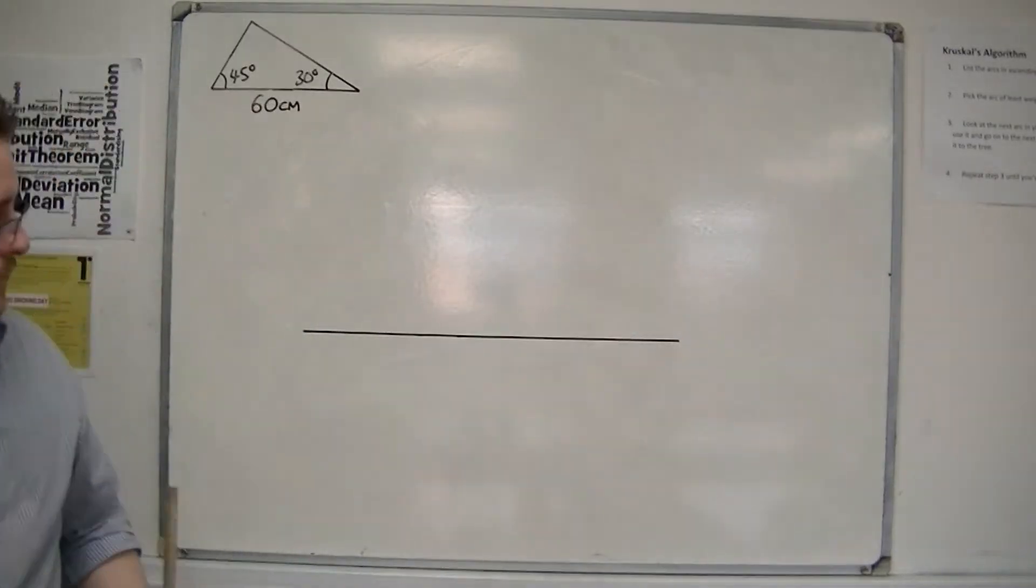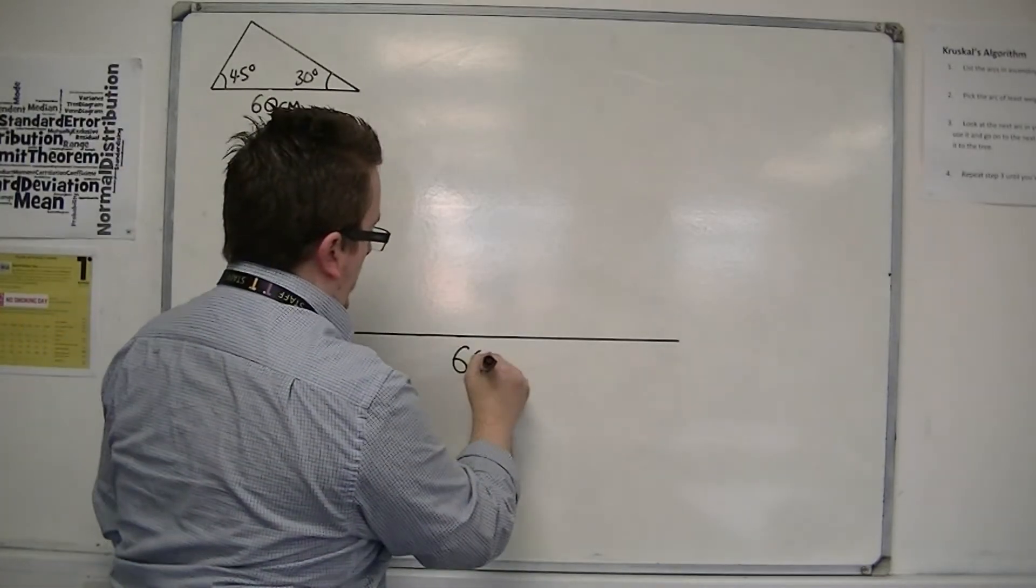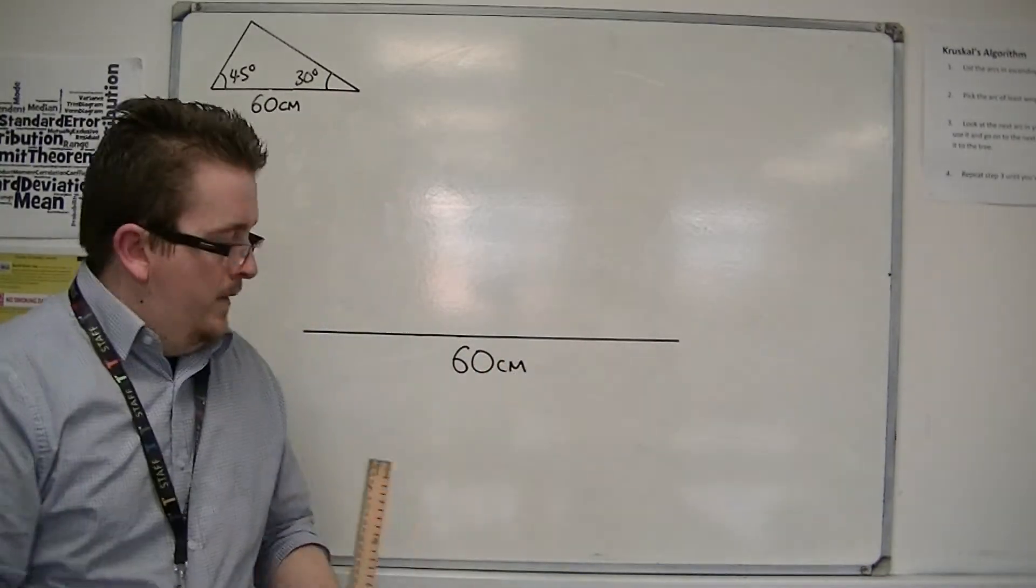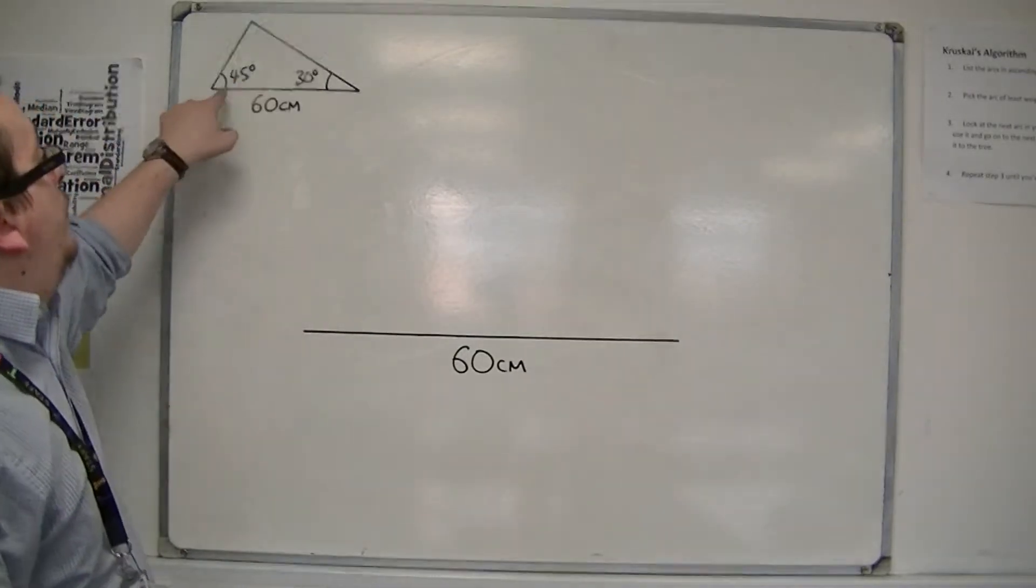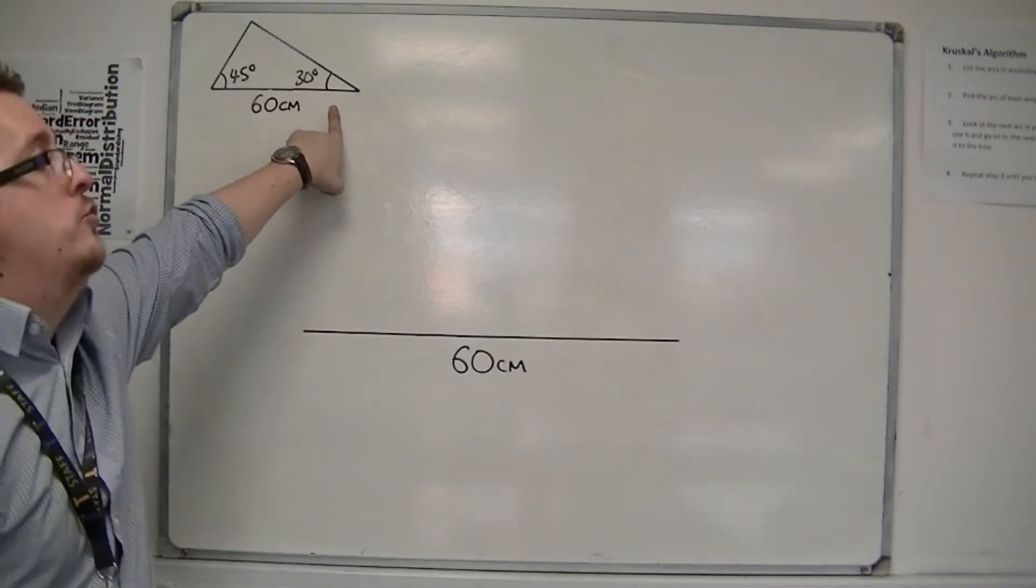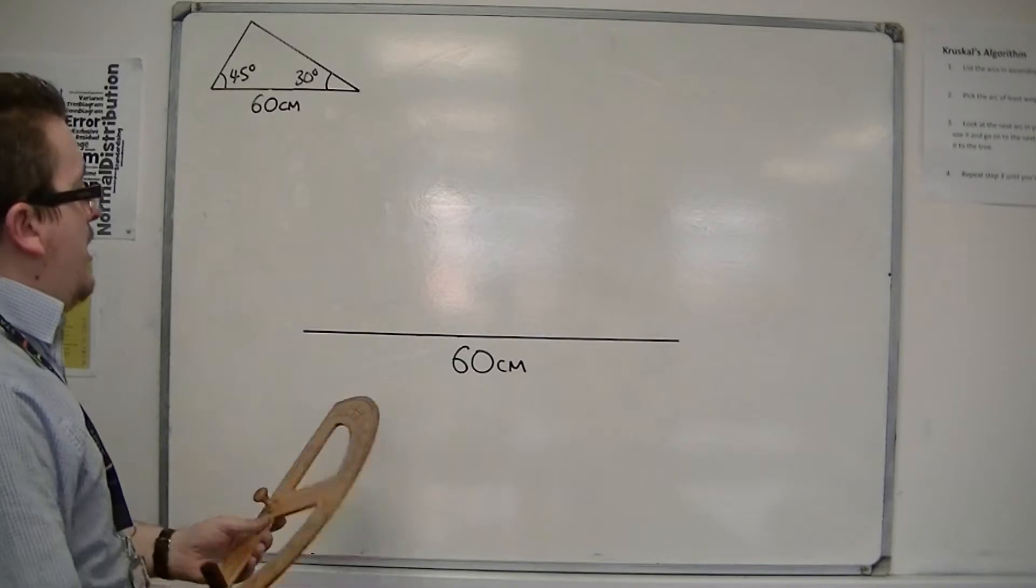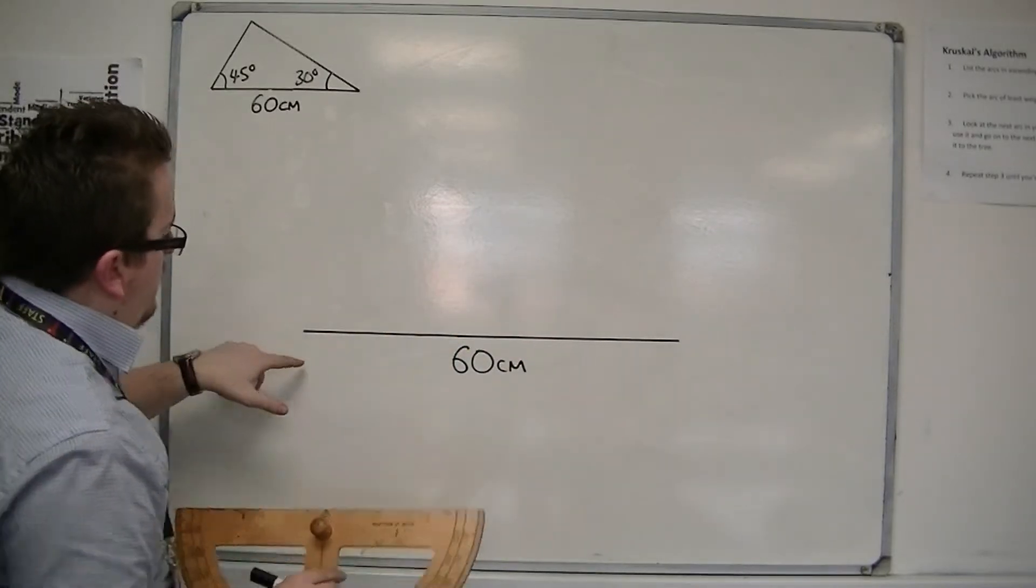Ok, that'll do. Right. I've then got to draw two angles, a 45 degree angle and a 30 degree angle. If I measure a 45 degree angle at this point, I'm going to measure it this way.